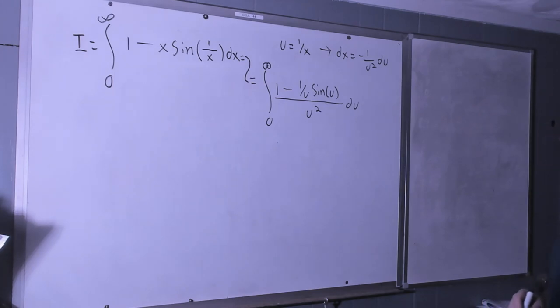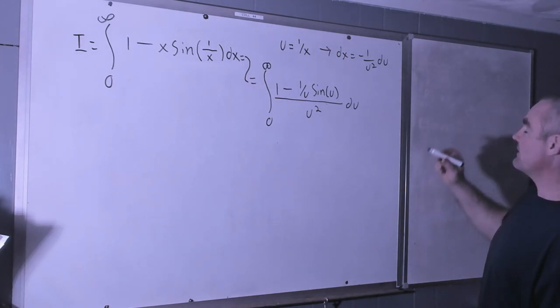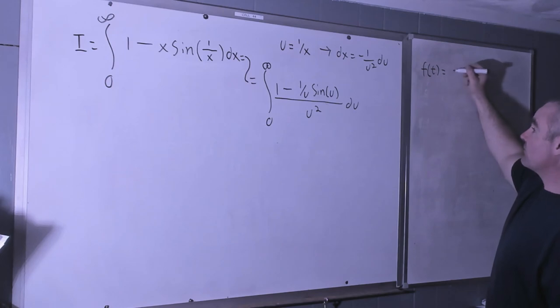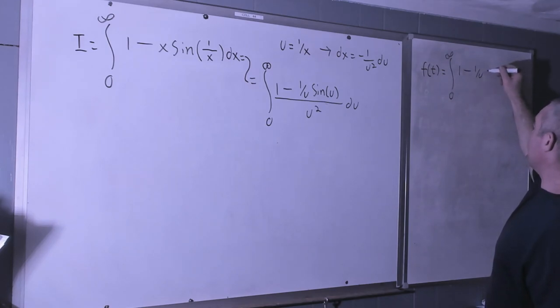Now as is typical with Feynman integration, we're going to create a function in terms of a new parameter, we're always on this channel that's f of t, going to be integral from 0 to infinity of 1 minus 1 over u, sin u over u squared.